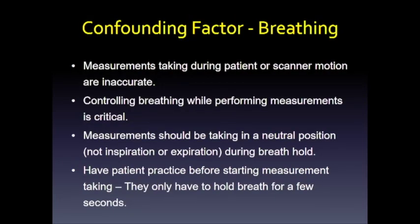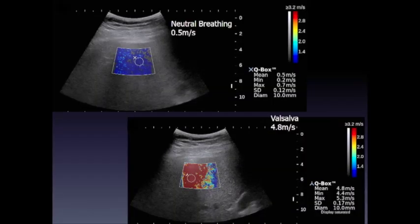Breathing is the most important factor when starting out. It's difficult to get patients to understand what you want — you need them to hold breath in the neutral position, observing the liver moving up and down on B-mode and pausing in the middle. As a breath is taken in, right heart pressure increases and is transmitted to the liver, increasing liver stiffness. These images — taken about 10 seconds apart — show no fibrosis with proper breathing but cirrhosis-level values at maximum Valsalva. Breathing makes a huge difference, so practice with every patient.